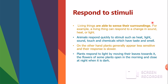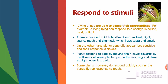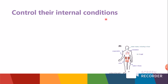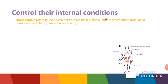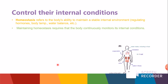Some plants like the Venus flytrap respond to touch very rapidly. This picture shows the Venus flytrap — when a fly goes inside the plant, it closes. The main concept here is homeostasis, which refers to the body's ability to maintain a stable internal environment, such as regulating hormones, body temperature, and water balance. The water intake and water passing out of the body must be equal to maintain a healthy life, because the body continuously maintains its internal conditions.